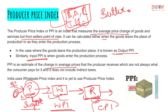PPI is an estimate of the change in average prices that the producer receives, which is not always what the consumer pays. As goods pass through many levels of the supply chain, costs are added — such as the producer's profit, transportation cost, packaging cost, and taxes. When the wholesaler sells to the retailer, more profit, transportation, packaging, and labor costs are added. All these charges accumulate, so the price at the producer level is always different from what the consumer pays.